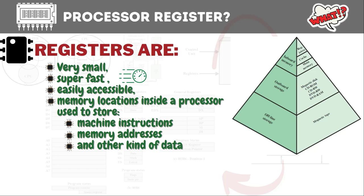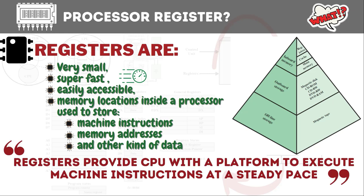Registers store memory addresses, whatever kind of address the CPU is operating on must be available inside a register. They store every kind of data — if we are going to perform addition of two numbers, those two numbers must be brought inside the registers before any operation is initiated. Registers provide the CPU with a platform to execute machine instructions at a steady pace. If we removed registers, the processor would have to access data from main memory or cache, causing a huge speed difference and slowing the overall CPU speed.